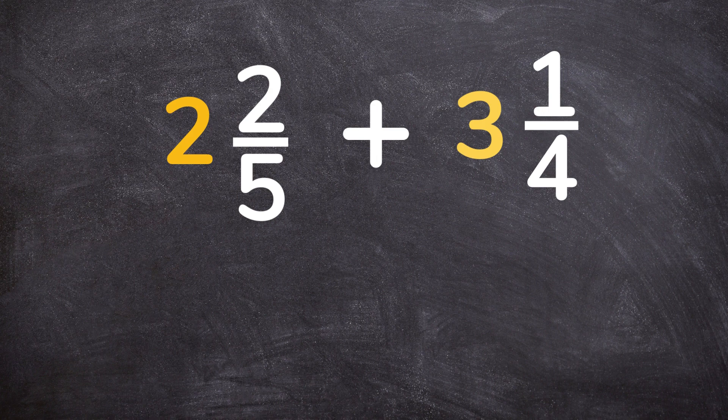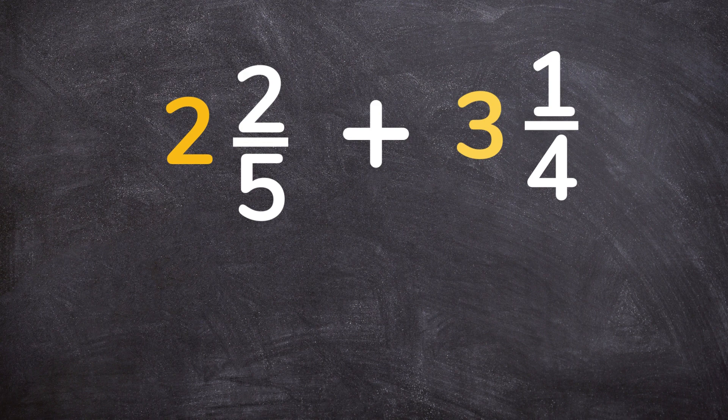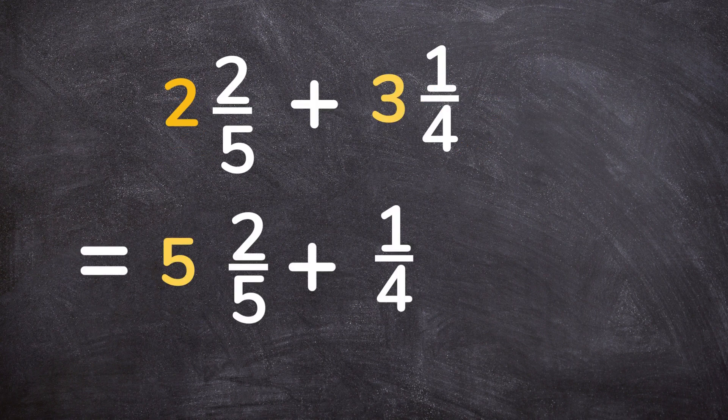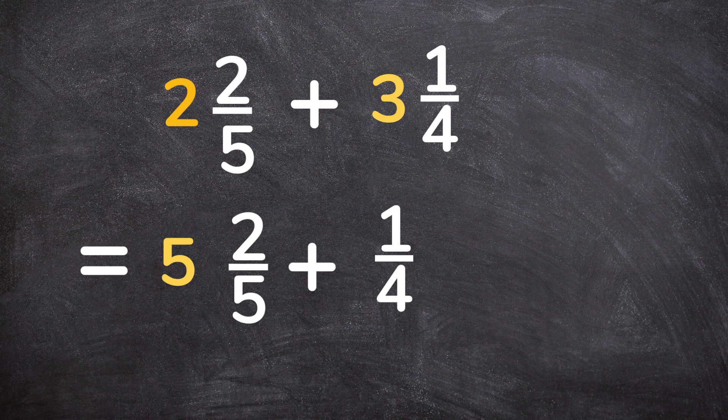So the easiest way to add mixed numbers is you first add the whole numbers together. Our first whole number is 2 and the second whole number is 3, so you do 2 plus 3, that will give you 5.